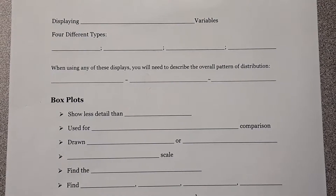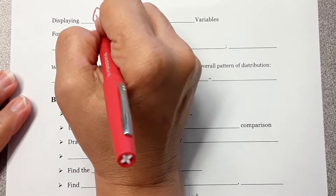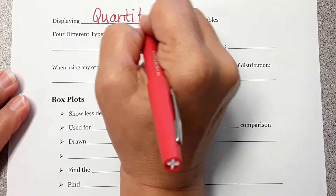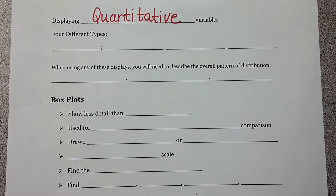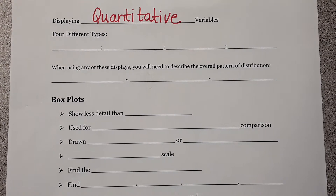Okay, so we're going to talk about how to display quantitative variables. These are the ones where your answers are numerical — we can find the average and we can find the center. Finding a numerical number makes sense for quantitative data. Categorical data does not.